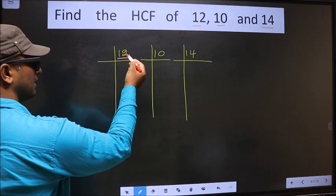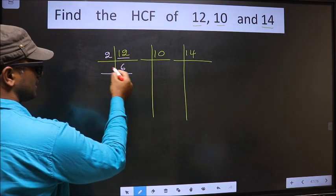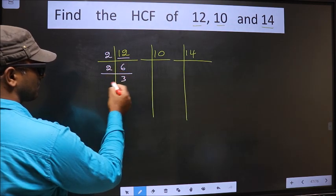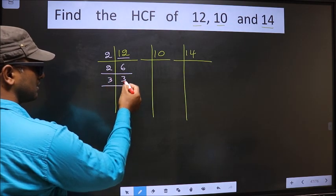Here we have 12. 12 is 2 times 6. 6 is 2 times 3. Now we have 3. 3 is a prime number, so 3 times 1 is 3.